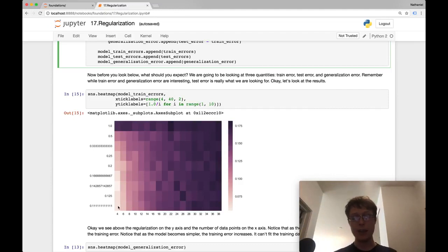This heat map is showing off the training error. As we decrease the regularization and decrease the number of data points, the training error gets better. We get the best training error when we have very few data points and very little regularization. We get the worst training error when we get many more data points because it's harder to fit all these noisy data points.